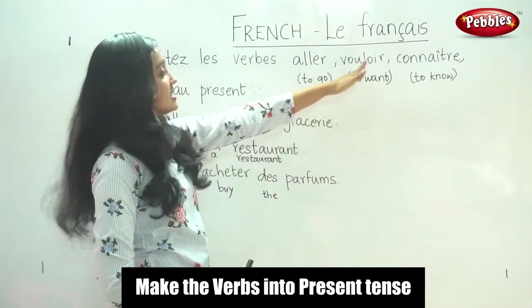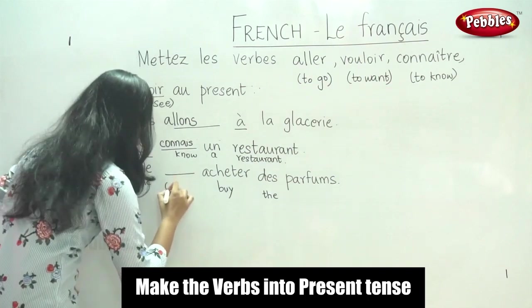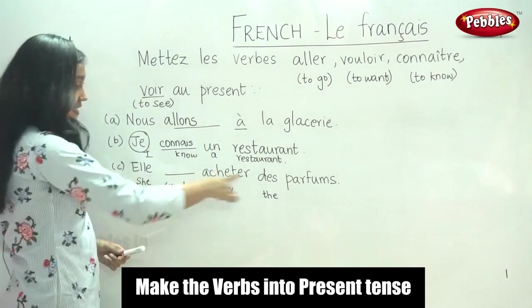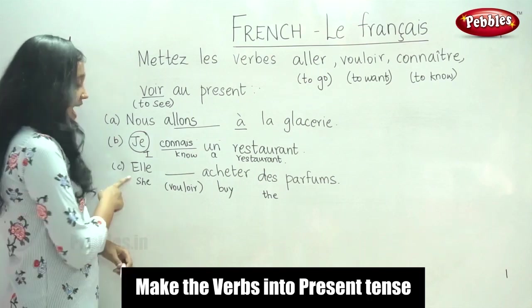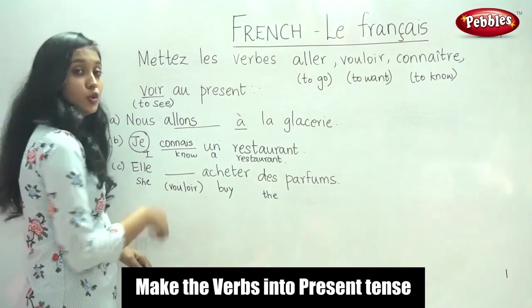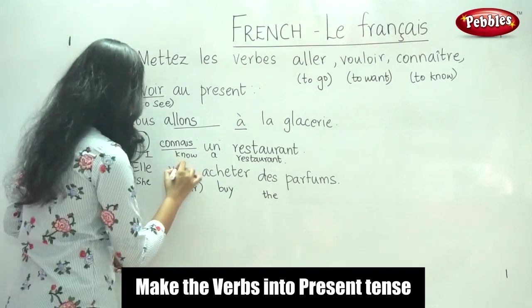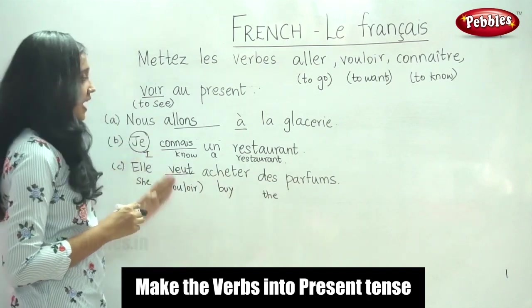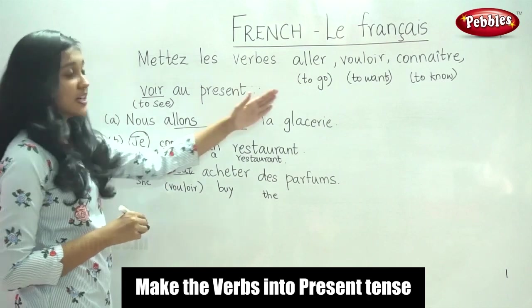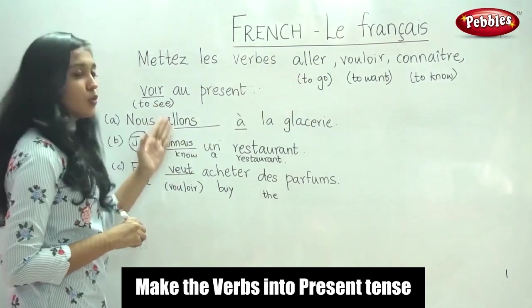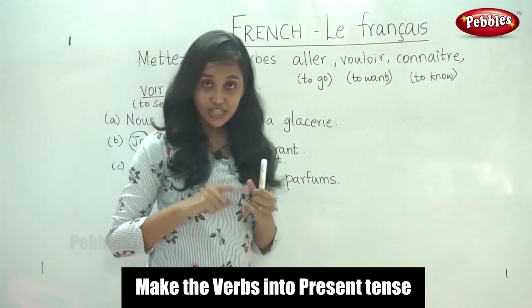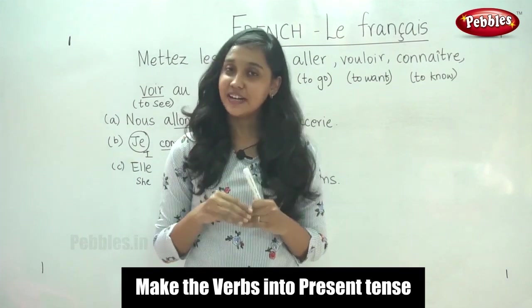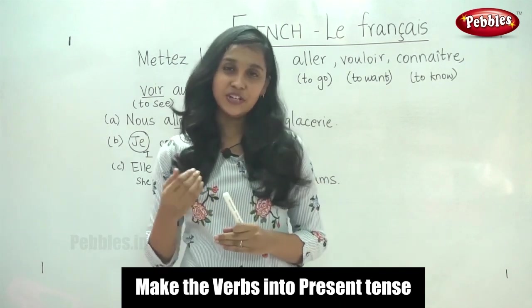For 'to want,' the verb is Vouloir. The subject pronoun in this sentence is 'elle.' The elle conjugation for Vouloir is 'veut.' So: Elle veut acheter du parfum — she wants to buy some perfume. Very simple exercise. By practicing similar exercises, you will become thorough with the verbs and their conjugation. The three steps: read the sentence, identify the verb, and conjugate it according to the subject pronoun.